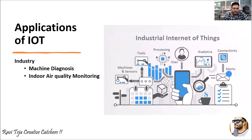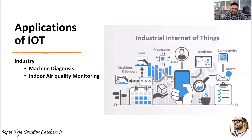IoT is already implemented in most industries. Starting from machines, sensors, and tools — processing, analytics, connectivity, and accident alerts can all be monitored. We can switch machinery on and off, alter the flow in industrial processes, and monitor the release of toxic gases in particular industries using industrial IoT applications, which are very helpful and important.